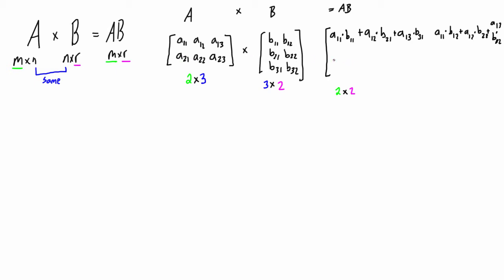We do the exact same thing for the second row, first column — we take the second row dot the first column and fill it in the same way. Then for the element in the second row and second column, we take the second row dot the second column, and then we close off the matrix. If we had actual numbers for each element, we'd simplify each dot product down to a single number per entry. This is the general case showing how we take the dot product of each corresponding row and column to get the entries.